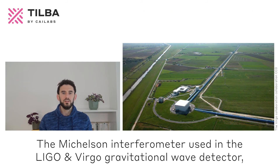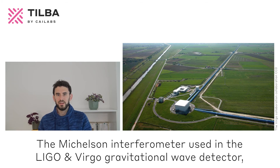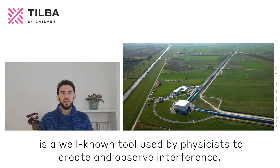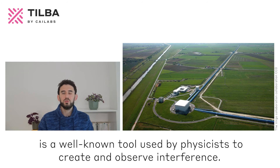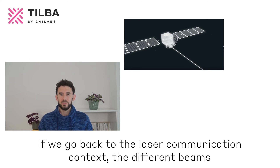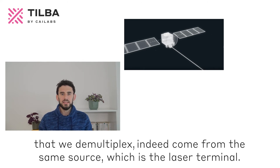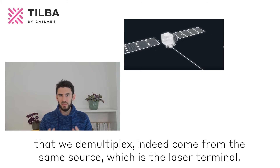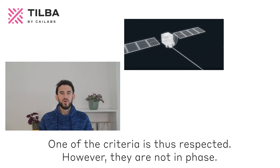One situation in which these criteria are matched is when the different beams are emitted from the same source and are phase-locked, meaning they have the same delay or optical path. The Michelson interferometer used in the LIGO and Virgo gravitational wave detectors is a well-known tool used by physicists to create and observe interference. If we go back to the laser communication context, the different beams that we demultiplex indeed come from the same source, which is the laser terminal. One of the criteria is thus respected.